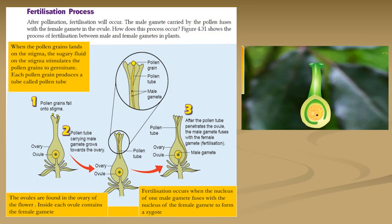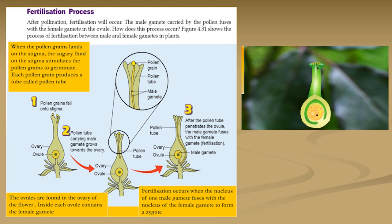When a flower matures, its stigma becomes sticky. When a pollen grain is transferred onto a stigma, it will germinate in a sugary solution and grow a pollen tube. The pollen tube with the male gamete grows down the style towards the ovule in the ovary.